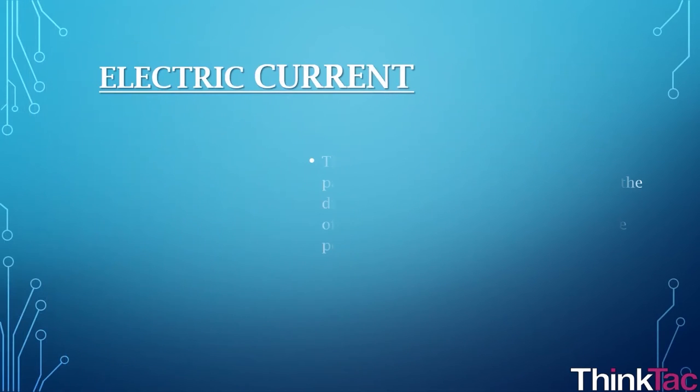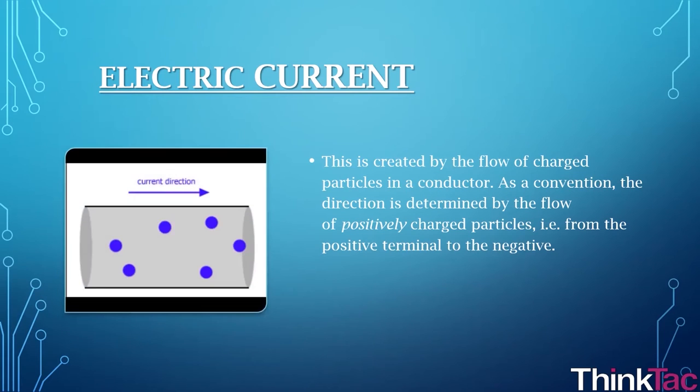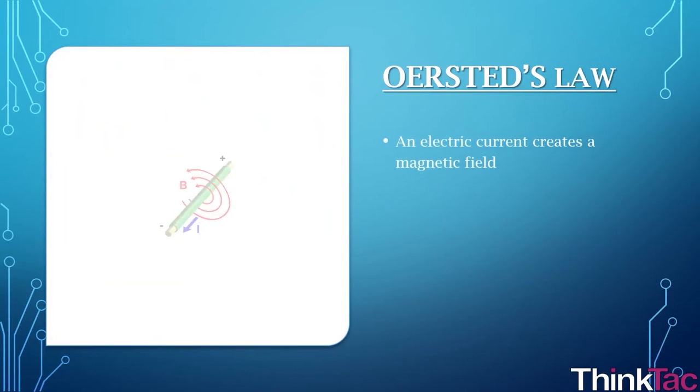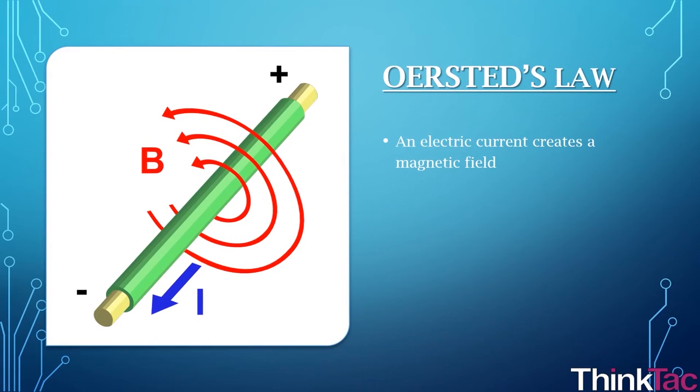Electric current. This is created by the flow of charged particles in a conductor. As a convention, the direction is determined by the flow of positively charged particles, that is from the positive terminal to the negative. As discussed earlier, Ørsted's law is nothing but an electric current creates a magnetic field.